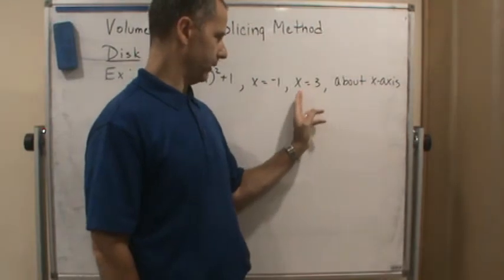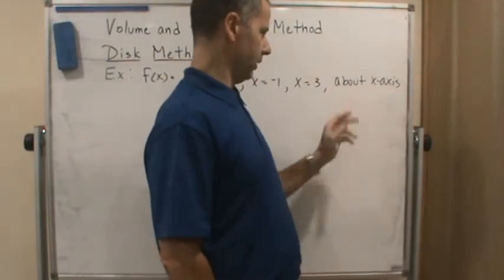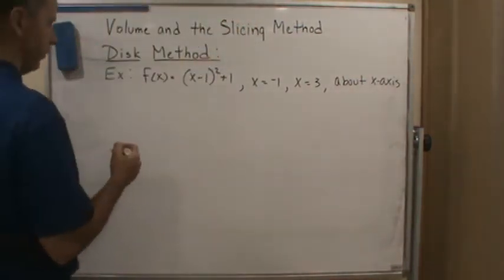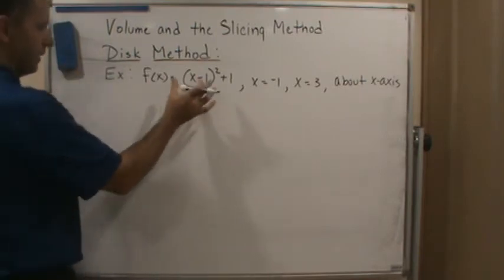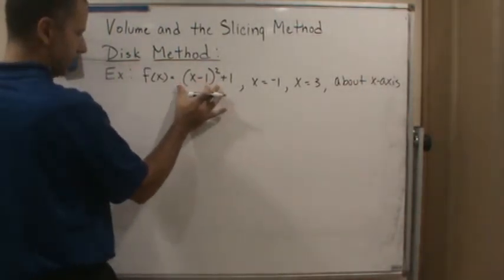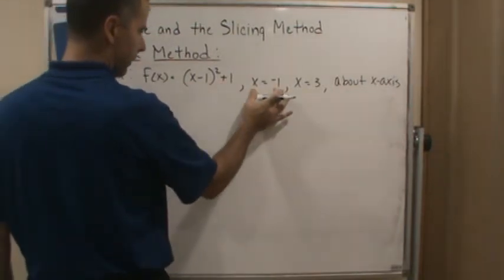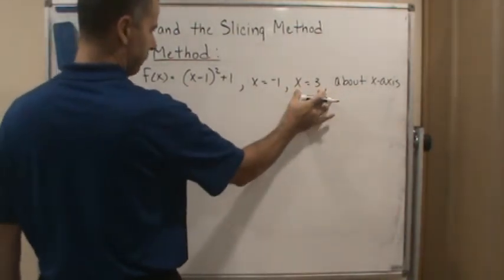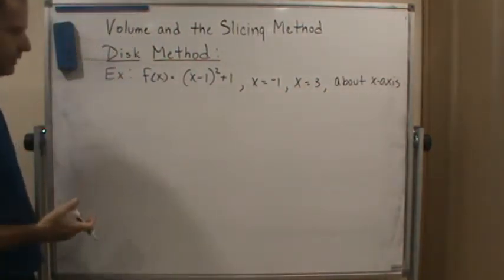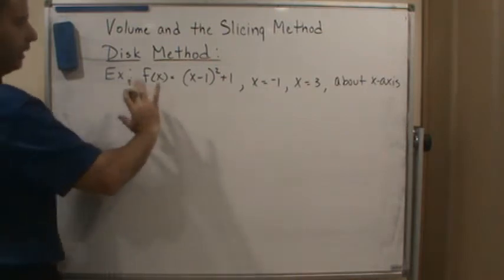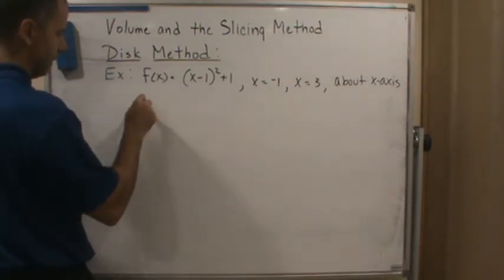We're going to rotate this region about the x-axis. You don't need to sketch the graph because it's going to be above the x-axis. It's bounded above by this function, bounded on the left by this line, bounded on the right by this line, and also bounded by the x-axis. So we've got a region defined pretty well here.